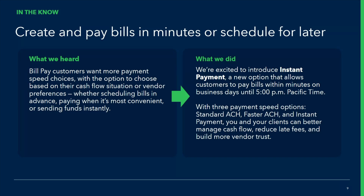There are now three payment speeds in QuickBooks Bill Pay: Standard ACH at three to five business days; Faster ACH payments for eligible customers, which is typically the next business day; and Instant payment. You and your clients can work together to figure out the best option for each of their vendors, and reduce any penalty fees and problems that might create issues from a vendor trust perspective.